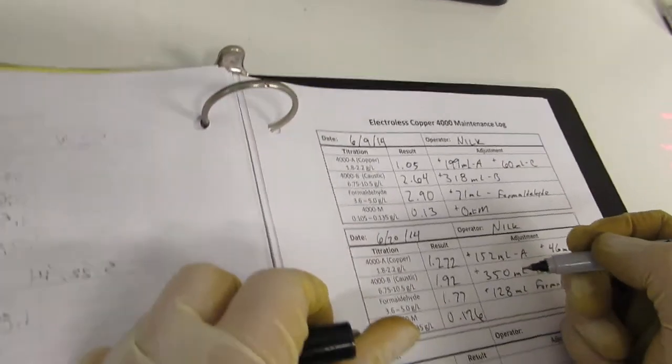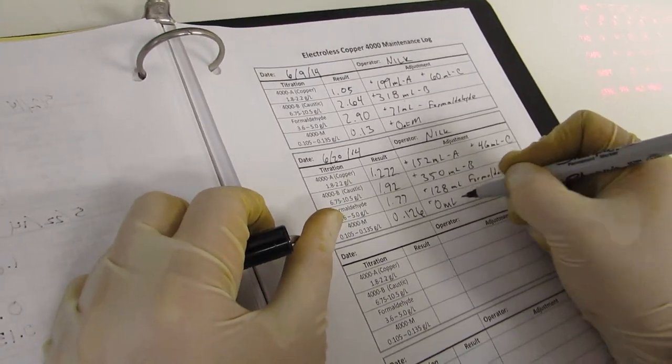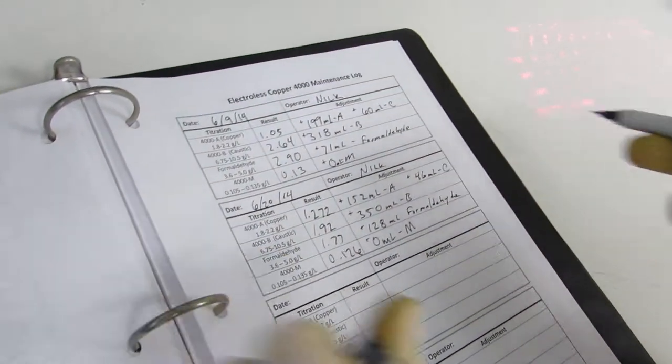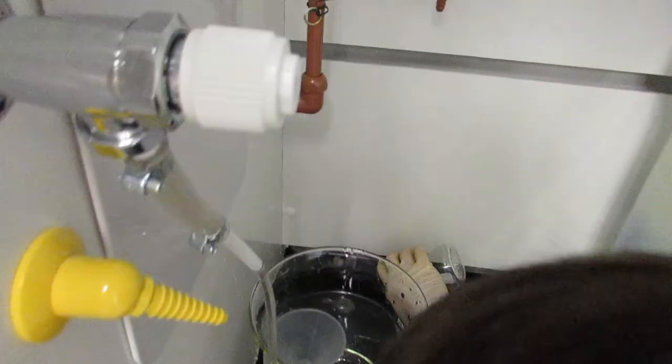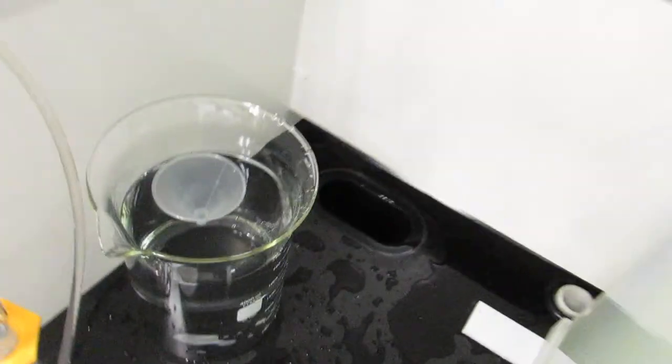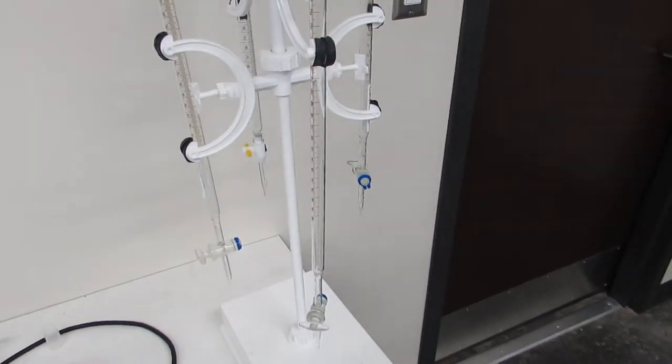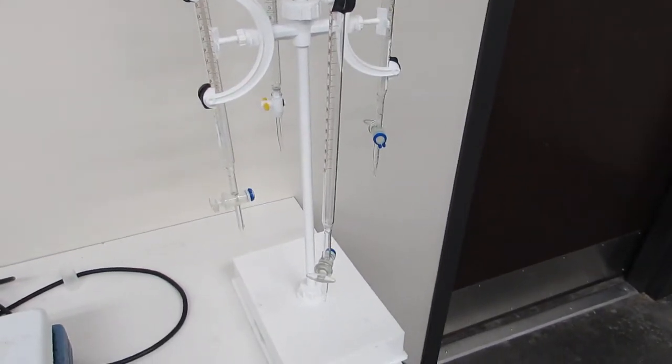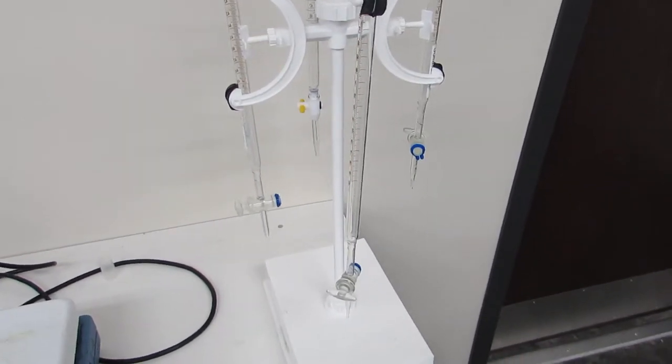And we have to add 0 milliliters of copper 4000M. So all chemicals can be disposed in this hole right here. Once you're done titrating, remember to put back the chemicals in the original container.